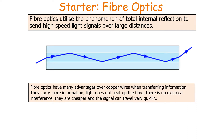Fibre optics have many advantages over copper wires for transferring information. Fibre optics can carry more information than copper wires. The light travelling down a fibre optic will not heat it up, unlike electrical signals in copper wires. There's no electrical interference in a fibre optic, they are cheaper than copper wires, and the signal can travel a lot faster in a fibre optic cable.